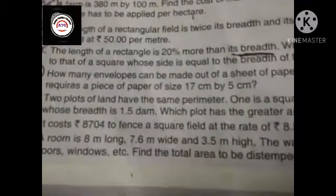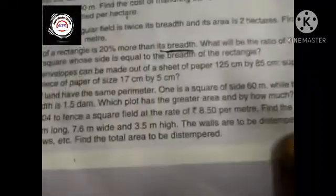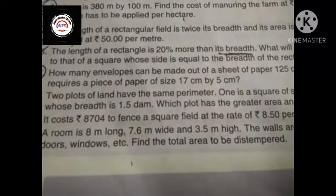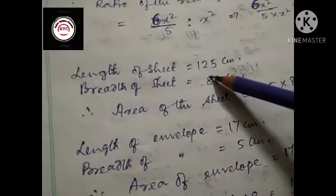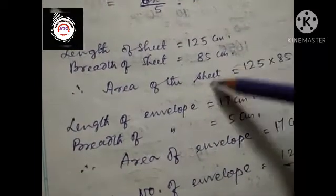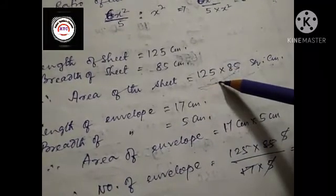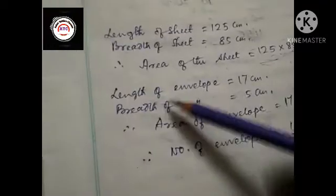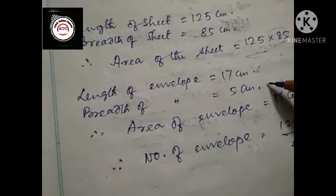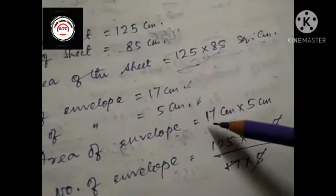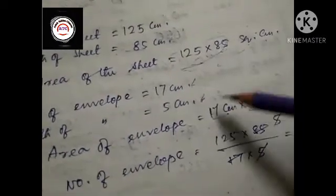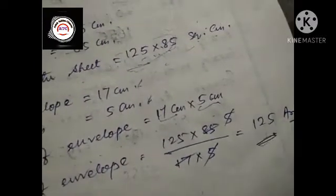Number 17. How many envelopes can be made out of a sheet of paper 120 cm by 85 cm, supposing one envelope requires a piece of paper of size 17 cm by 5 cm? Length of the sheet is 125 cm and breadth is 85 cm. Area of the sheet is 125 into 85 cm². Area of the envelope is 17 cm multiplied by 5 cm. Therefore number of envelopes is equal to 125 into 85 divided by 17 into 5, which gives 120 envelopes.